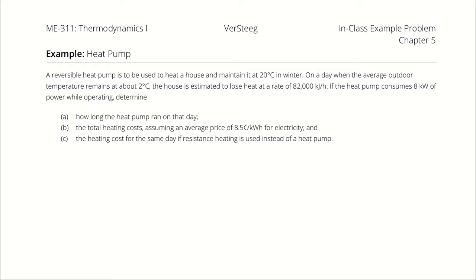A reversible heat pump is to be used to heat a house and maintain it at 20 degrees Celsius in the winter. On a day when the average outdoor temperature remains about 2 degrees Celsius, the house is estimated to lose heat at a rate of 82,000 kJ per hour. If the heat pump consumes 8 kW of power while operating, determine first how long the heat pump ran that day, then the total heating costs assuming an average price of electricity of 8.5 cents per kWh, and the heating costs for that same day if we were using electric resistance heating.